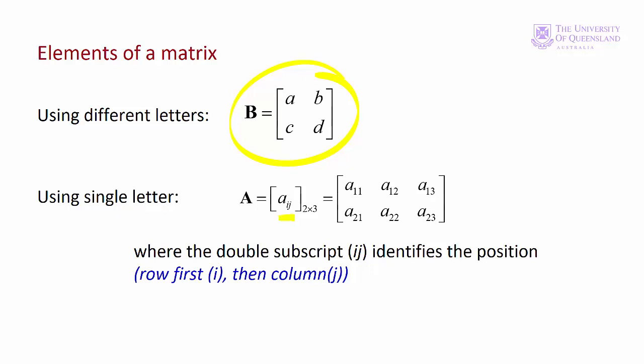So here we have the general form. Element I, J in a two by three. Element one, two is in row one, column two. Element two, three is in row two, column three.